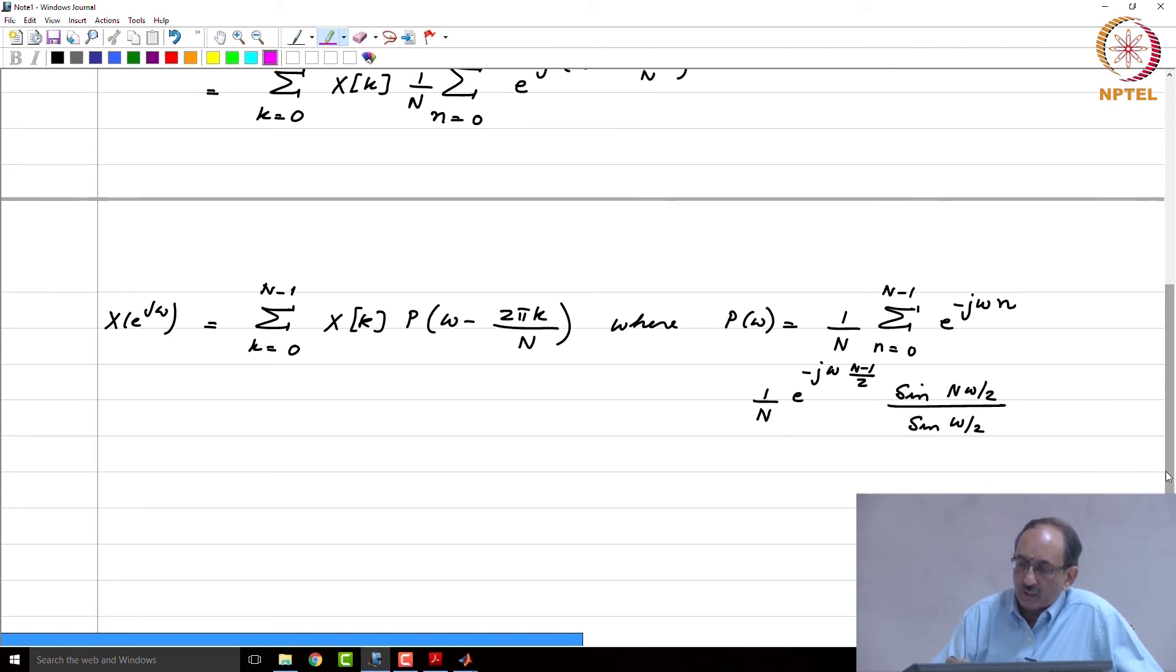So, whenever you hit the sample value, contribution from other samples will be 0. Only that sample will survive, which is what should be because that sample value equals the value of the DTFT at that point. So you do not need any other contribution. It is only in between samples you need contributions from every other sample.